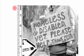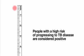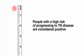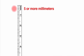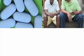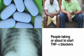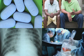Skin tests are interpreted based on several different factors: the size of the induration in millimeters, the person's risk of getting TB infection, and the risk of progression to TB disease if infected. People with a high risk of progressing to TB disease are considered positive if the induration is 5 or more millimeters. These include people living with HIV, people in recent contact with those with infectious TB disease, people whose chest radiographs recently changed from negative to positive, people taking or about to start TNF-alpha blockers, and those who are immunosuppressed, such as organ transplant patients.